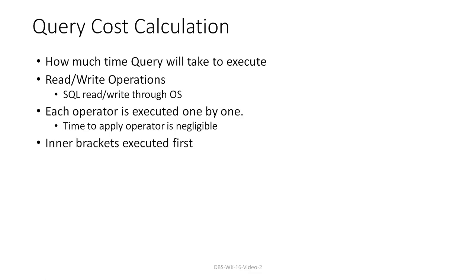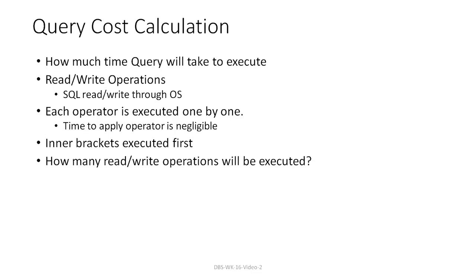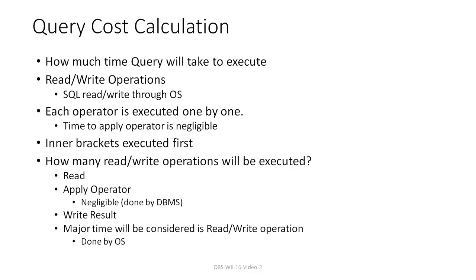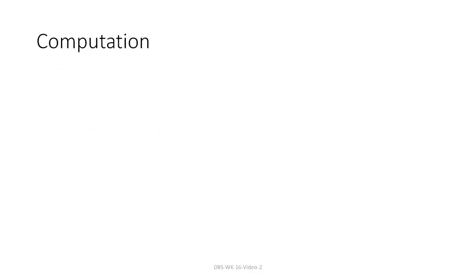The inner brackets are the first to execute. How many read and write operations will be executed? Let's look at how it works with Q and Q. Imagine 4 plus 5 plus 7 — you get 16. How does this 16 happen?